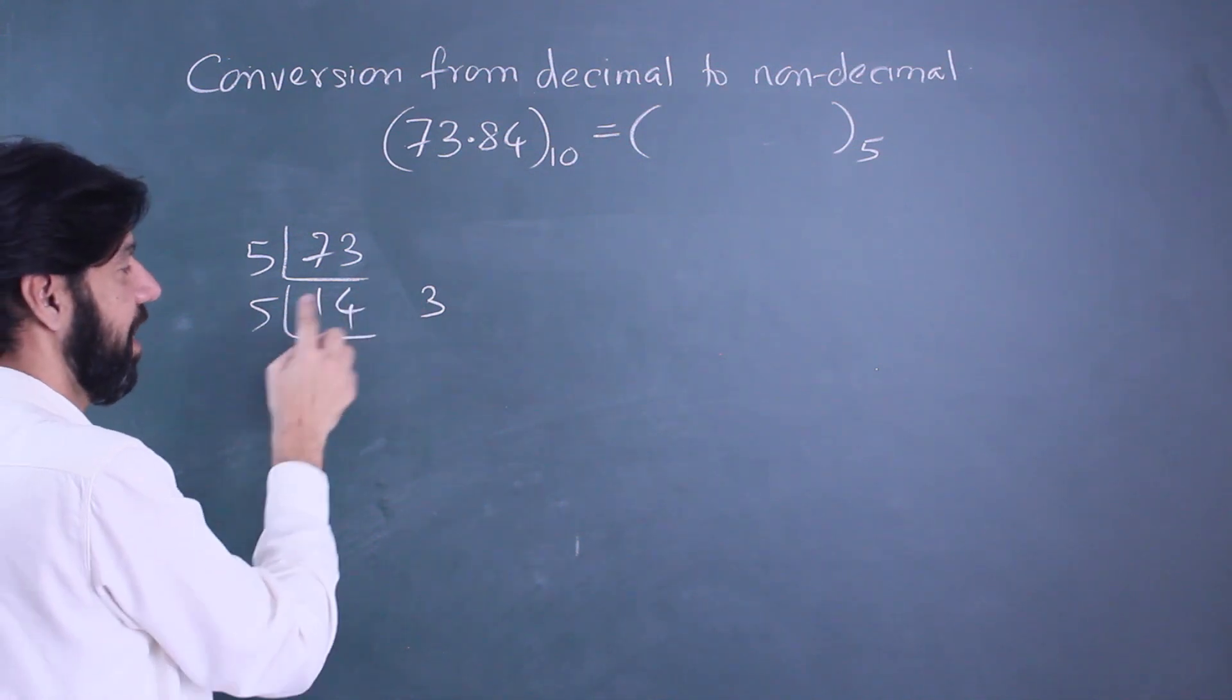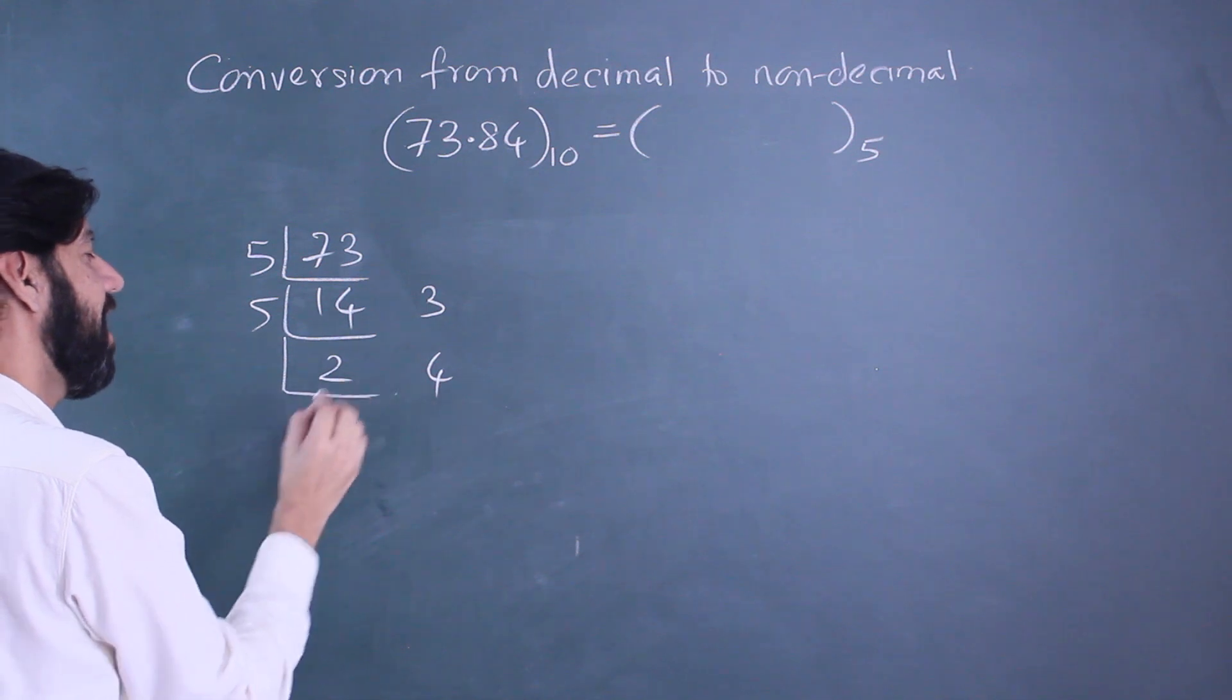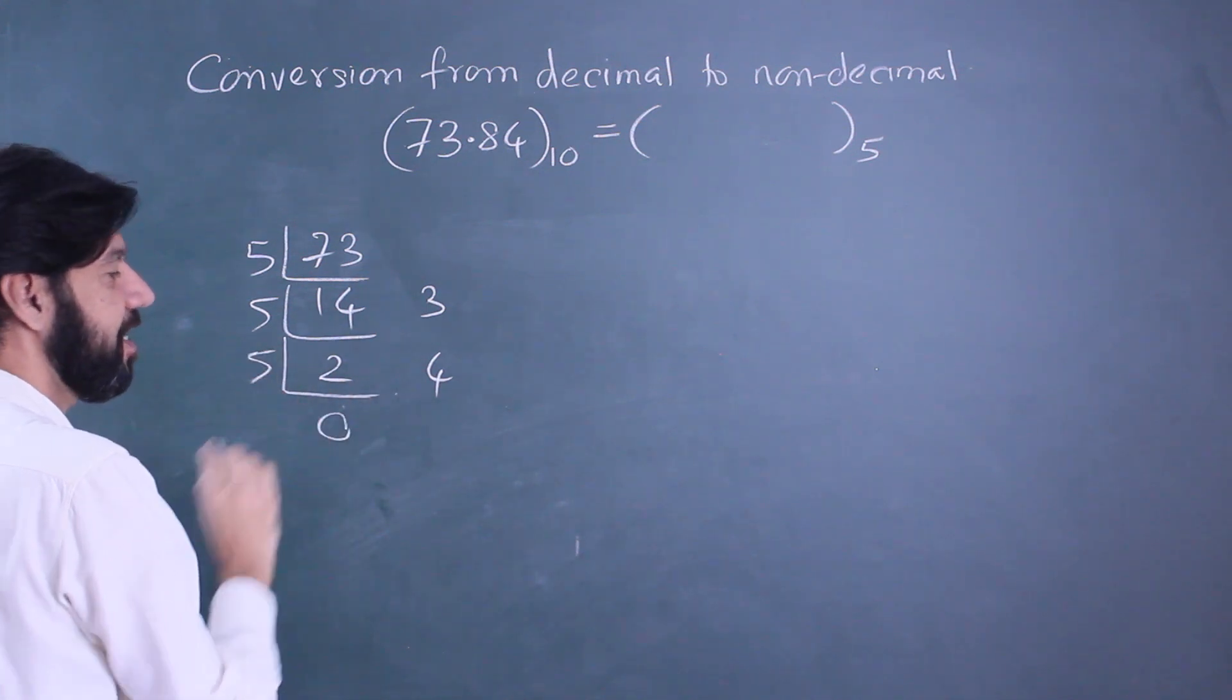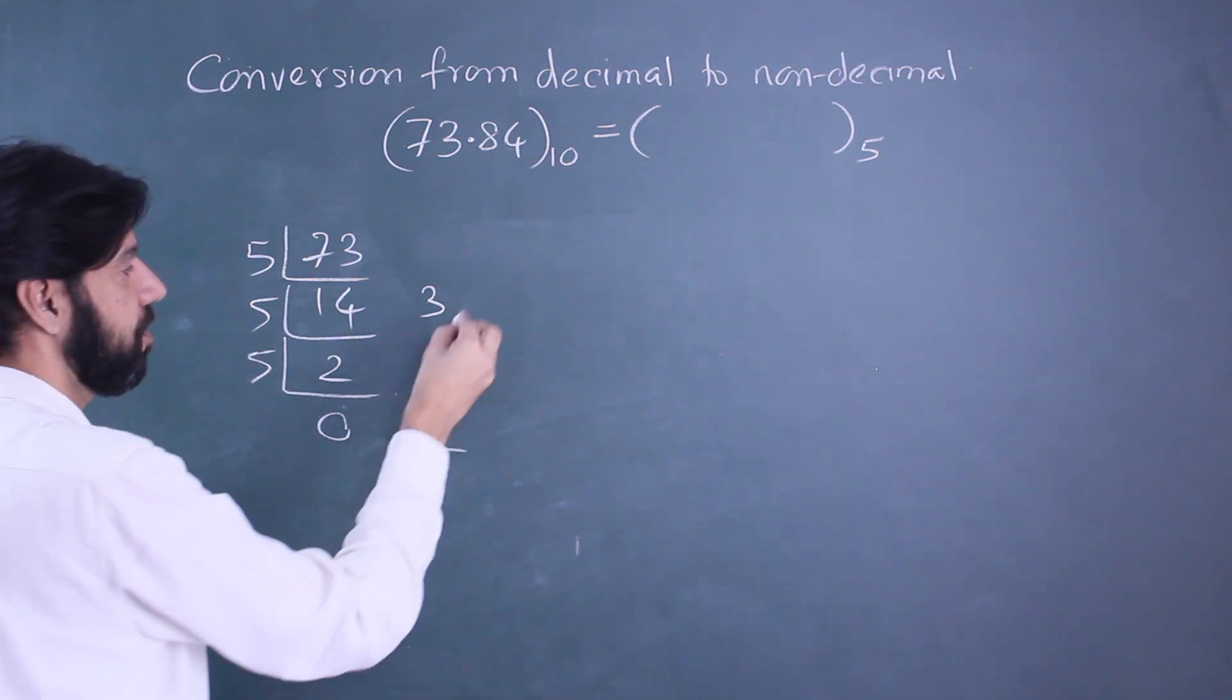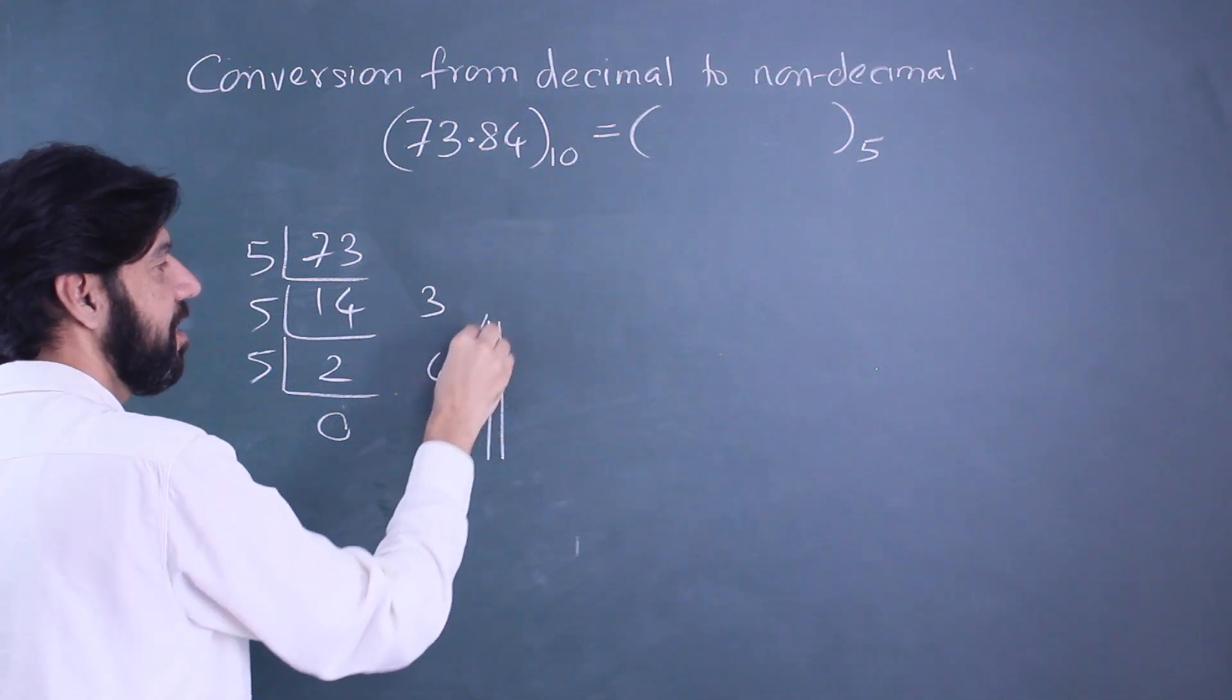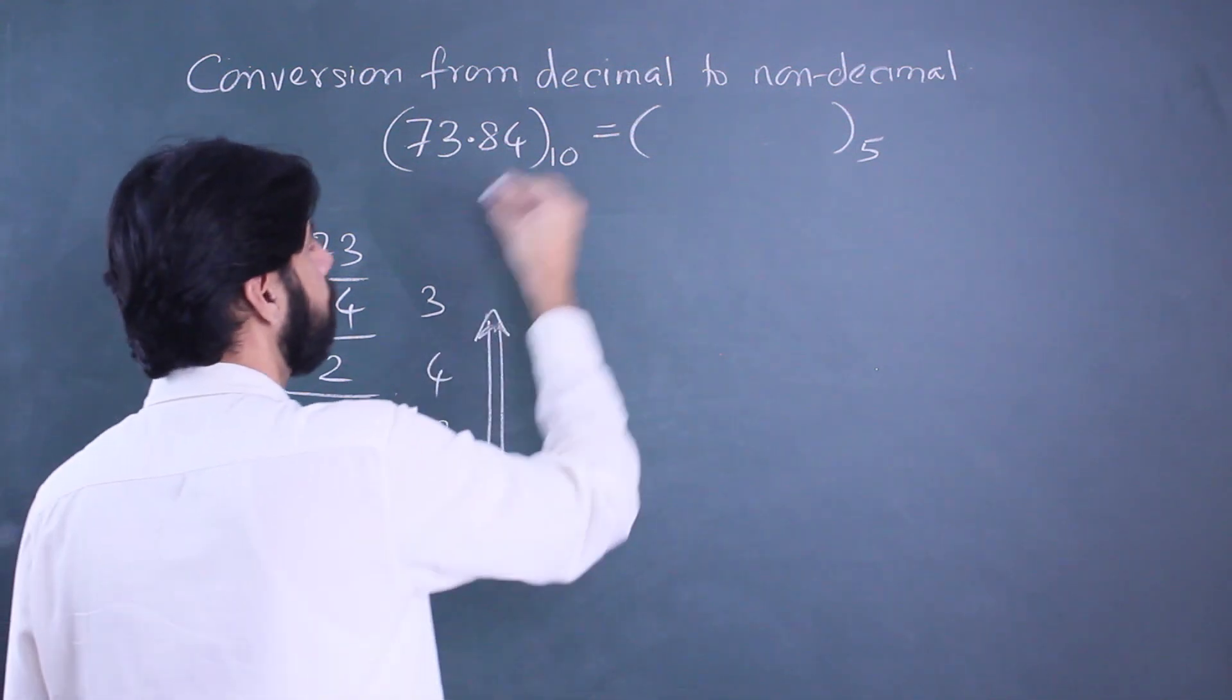Divide by 5: 5 twos are 10, this is the quotient, the remainder is going to be to the right. Again when you divide you get 0, the remainder is 2. So the integral part is the remainders in reverse order: 243.